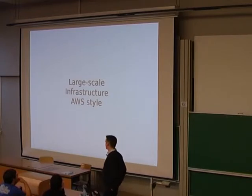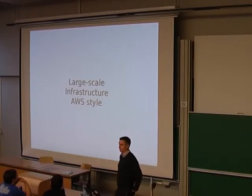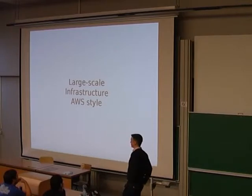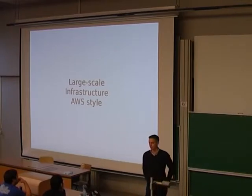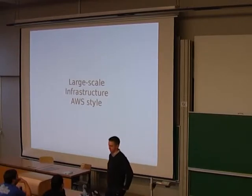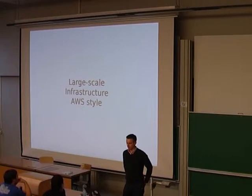Everybody wants to call their service cloud, and maybe they're all valid uses of the word cloud. But what we're really trying to do with OpenStack is AWS-style cloud — the EC2, EBS, S3, VPC — that's basically what we're trying to build: that style of service.